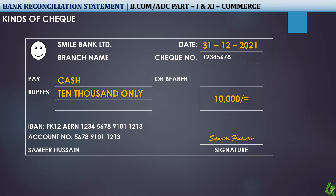Kinds of checks. There are many checks I want to explain here. I have tried to make a specimen. Here we have a date, a check number, a bank name, a branch, and a bank logo. This is Smile Bank.